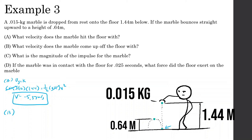Part B: what velocity does the marble come up off the floor? The marble bounces up to a height of 0.64 meters. Using kinetic energy to potential energy: 0.5 × 0.015 × v² = 0.015 × 10 × 0.64. The 0.015 cancels, giving v = √(2 × 6.4) = 3.58 meters per second upward.